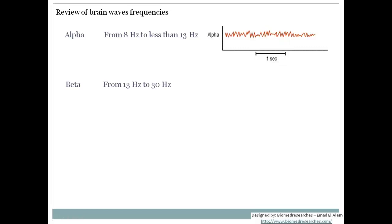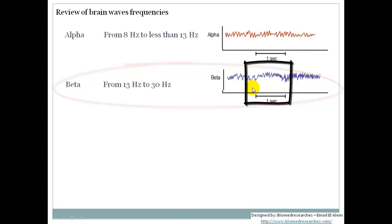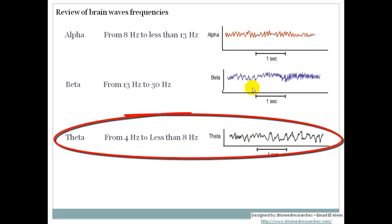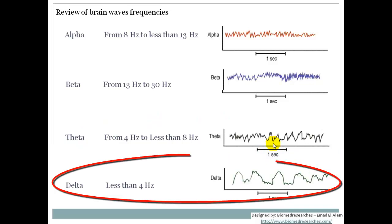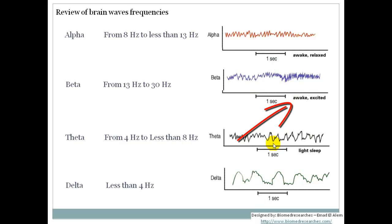We have the beta waves which is from 13 Hz to 30 Hz. If we count the waves between this one second, we will find it either it's from 13 to 30 Hz. We have the theta brain waves which is from 4 Hz to less than 8 Hz. And finally, we have the delta brain wave which is less than 4 Hz. The alpha brain waves can be present on the awake relaxed, the beta brain waves are present on the awake excited, the theta brain waves are seen on the light sleep, and the delta brain waves are seen on the deep sleep.